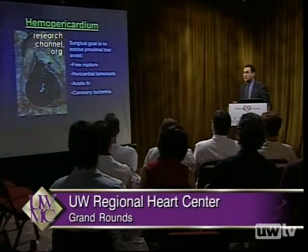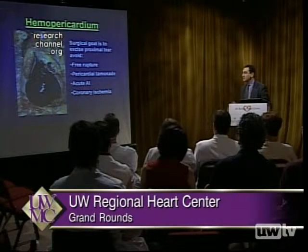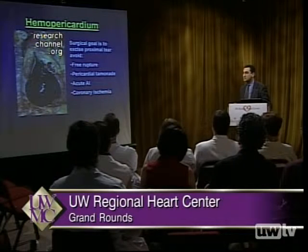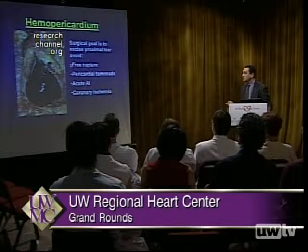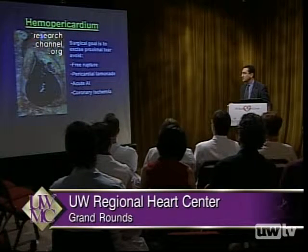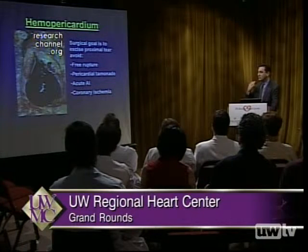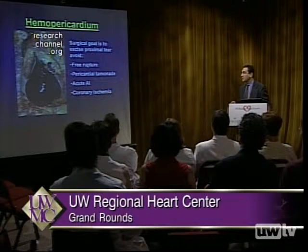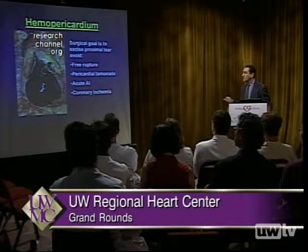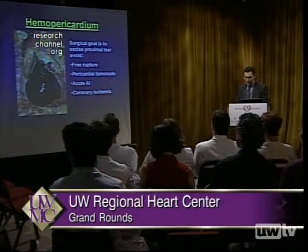The initial goals of the surgical approach are to avoid a proximal tear. It is the tear involving the heart itself that usually causes the patient's early death, and this can be associated either with a free rupture of the aneurysm itself, with pericardial tamponade, with acute decompensated aortic insufficiency, or with blood in a false lumen shearing one of the coronaries and causing coronary ischemia. So, even before opening the pericardium, we have to be able to put the patient on bypass to quickly deal with these issues if they develop.